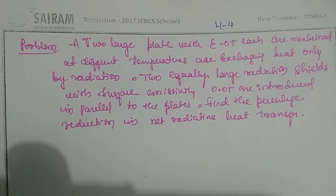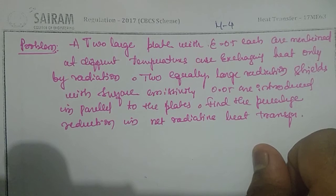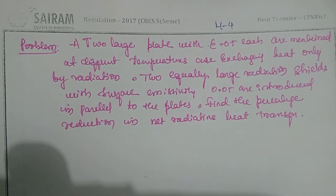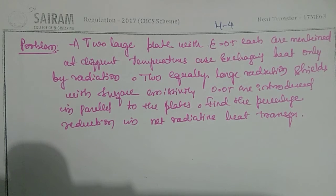In this problem we are going to find out what is the percentage reduction in net radiative heat transfer. To calculate the net radiative heat transfer reduction, we have to consider two cases: first, with shields, how much heat transfer is taking place, and without shields, how much. By comparing these two Q values, we find the percentage reduction in heat transfer.